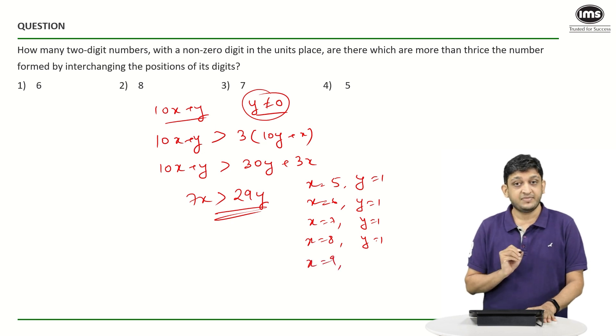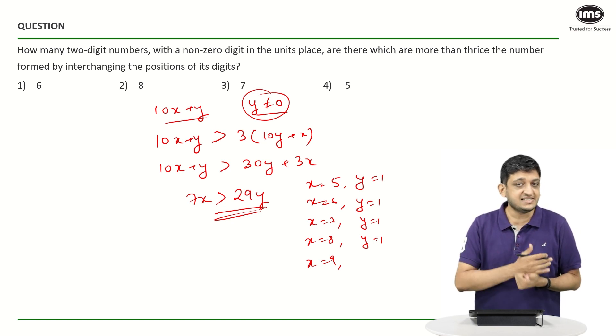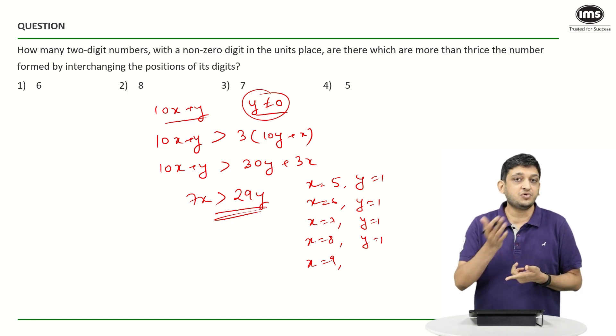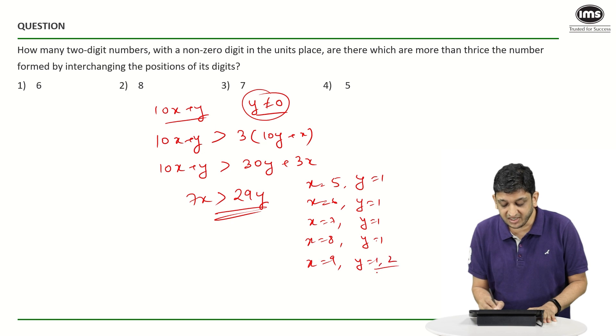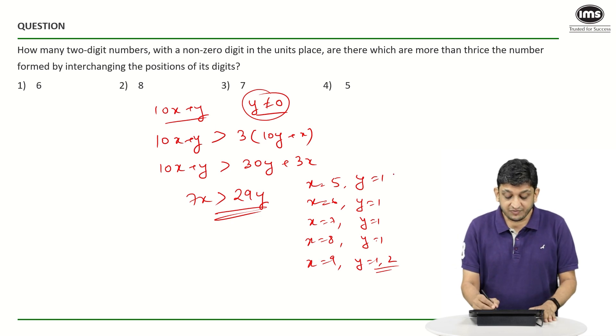What happens when X is equal to 9? When X is equal to 9, you are going to get 7 times 9 is 63, greater than 29Y. Now in this case, if Y is equal to 1, of course 29 is going to be less than 63, but even if Y is equal to 2, 58 is going to be less than 63. And so in this particular case, we are going to get 2 values for Y that are possible, which is Y equal to 1 and Y equals 2. So we have a total of 1, 2, 3, 4, 5, and 6 solutions when it comes to this particular condition.